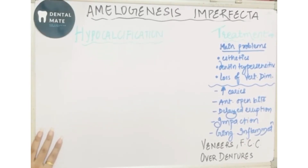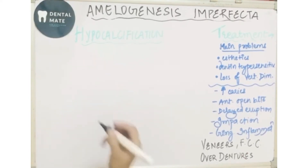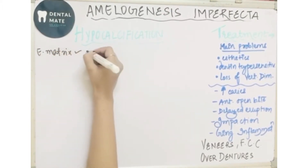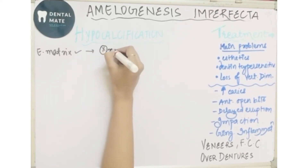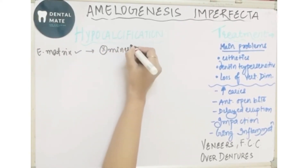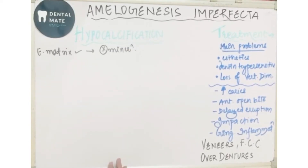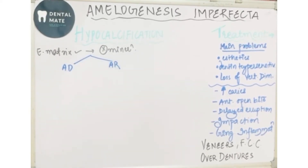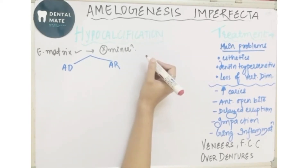In the hypocalcified type of amelogenesis imperfecta, the enamel matrix has been laid down properly but there is no mineralization. The enamel matrix is laid down but there is no mineralization. This hypocalcified type can be of two types: autosomal dominant and autosomal recessive.